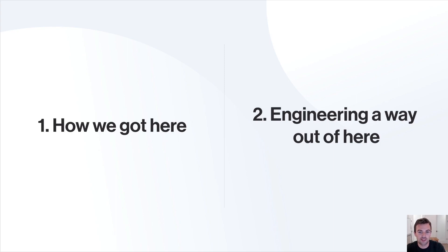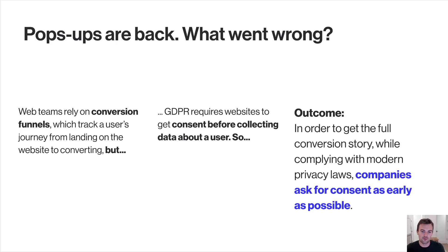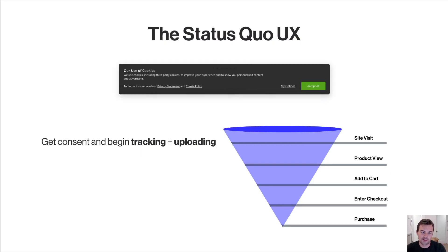First we're going to talk about how we got here, and then we'll talk about how we can re-engineer our way out of this. Web teams today rely on conversion funnels, which track a user's journey from landing on the website to converting — like signing up or checking out of a shopping cart. But GDPR requires that websites get consent before collecting data about a user, so companies have to ask for consent as early as possible.